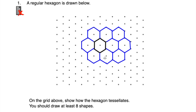As you can see, I've now drawn nine more regular hexagons - one, two, three, four, five, six, seven, eight, nine. The question said to draw at least eight shapes, so I've drawn nine here, just to show how this hexagon tessellates - they fit together perfectly with no gaps. So that's how I would approach question number one.